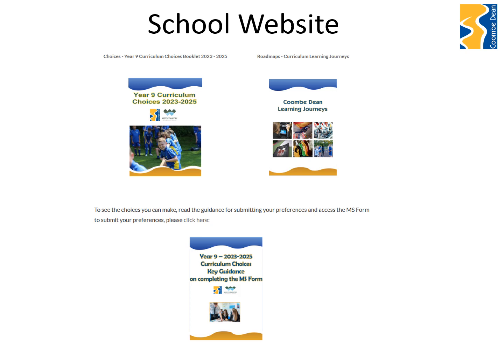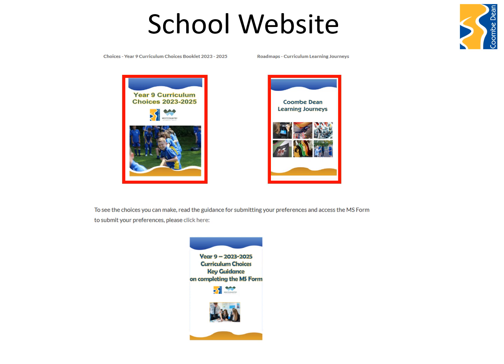When you find that section of the school website, there are three all-important documents relating to the process. The first is the Year 9 Curriculum Choices booklet — by the time you get to the website following this presentation, you will find the up-to-date version for students studying their courses from 2024 to 2026. This takes you through the details of the subjects as part of our core curriculum and those all-important option subjects. You can refer to it for specific information about what is studied and how the courses are assessed. You'll also find information about the Coomdean Learning Journeys and a very important form: the Curriculum Choices Key Guidance to Completing the MS Form — advice and guidance on how to complete the Microsoft form used to select the options you would like to study.